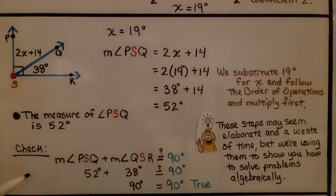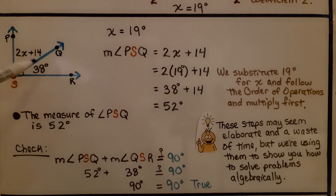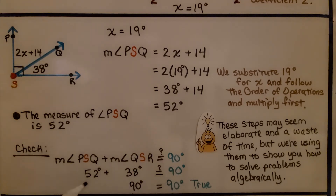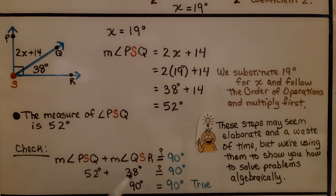We can check: the measure of angle PSQ plus the measure of angle QSR should equal 90 degrees. We have 52 degrees plus 38 degrees — is that equal to 90 degrees? Yes, 52 plus 38 is 90 degrees. It's true.